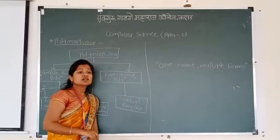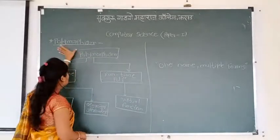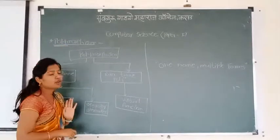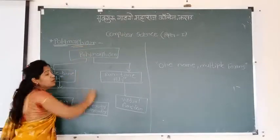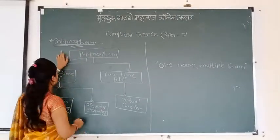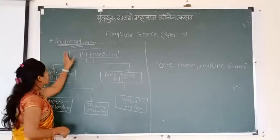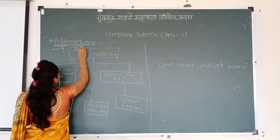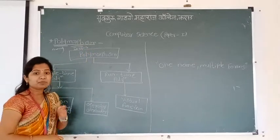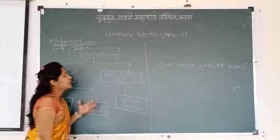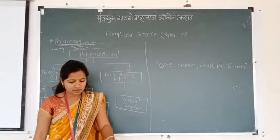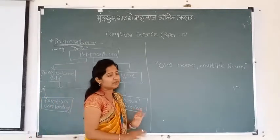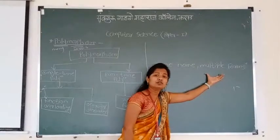The word polymorphism — what is its meaning? 'Poly' means many, and 'morphism' means forms. So the meaning of this word is 'many forms.' Polymorphism is an important object-oriented concept. Simply, the definition is: one name, multiple forms.